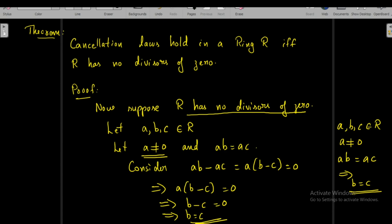So when AB = AC we arrive at the conclusion that B = C, provided R has no divisors of zero. In other words, if R has no divisors of zero, then the left cancellation law holds in R. Similarly, we can show the right cancellation law also holds in R. Thus we have proved the theorem: cancellation laws hold in R if and only if R has no divisors of zero.